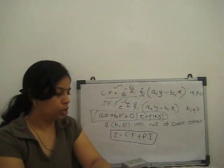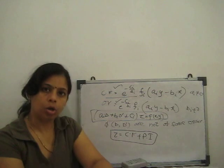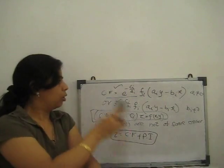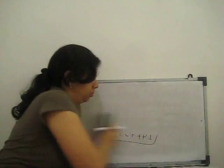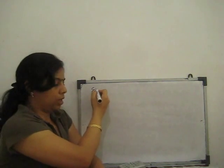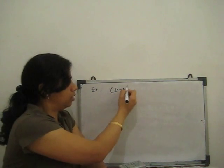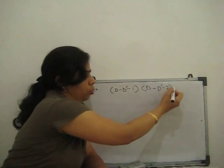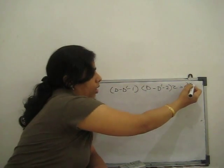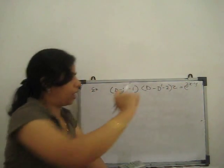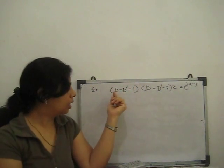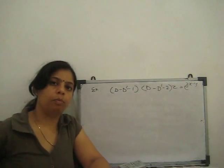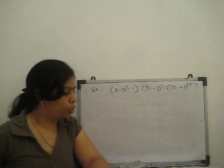Now I solve one example on the non-homogeneous linear equation so you can better understand. The example is: solve (D minus D' minus 1)(D minus D' minus 2) of z equal to e to the power 2x minus y. We can see this is non-homogeneous because every term does not have the same power.